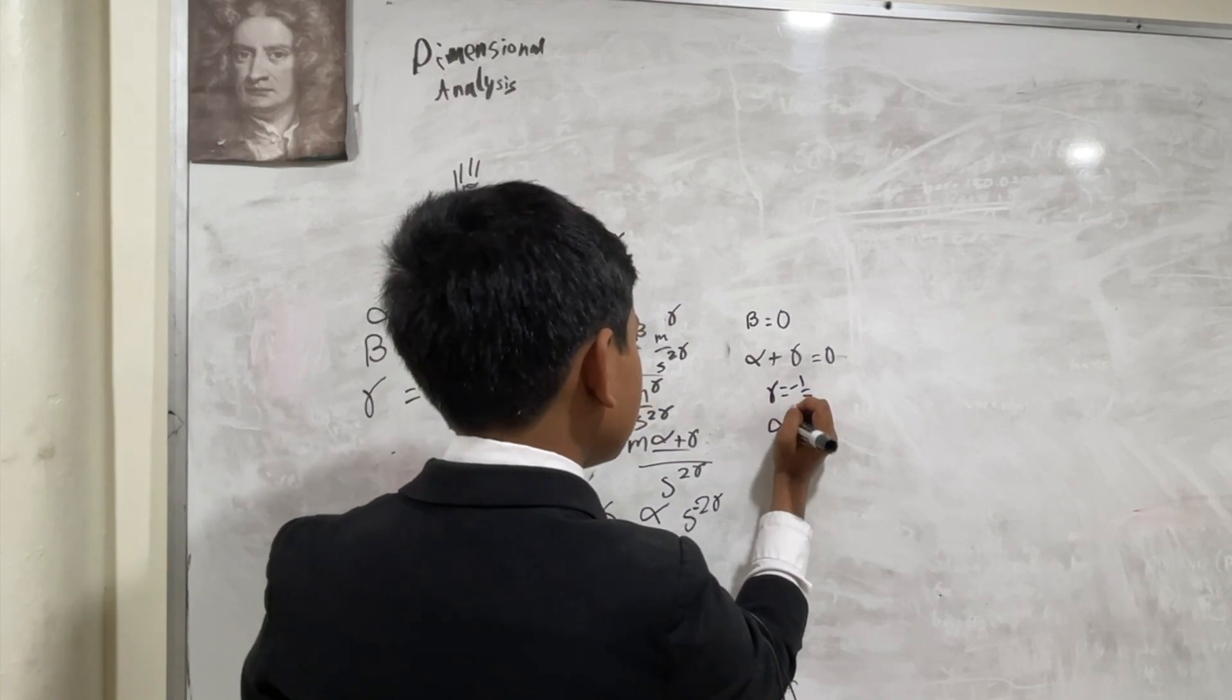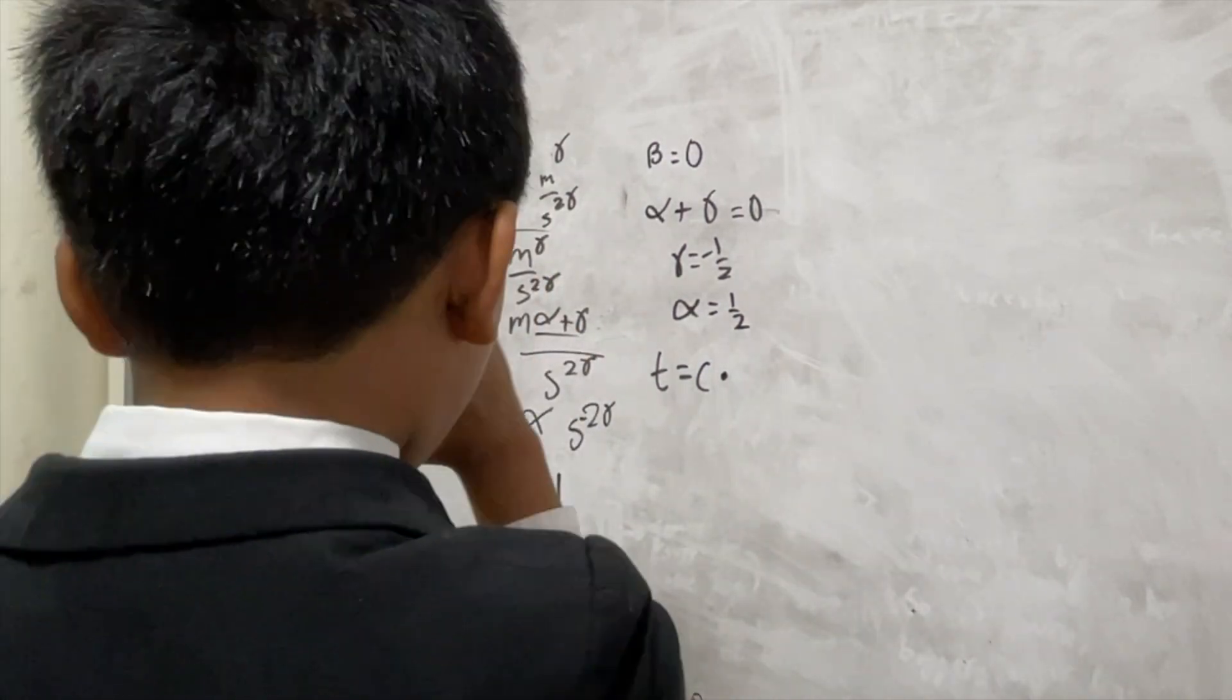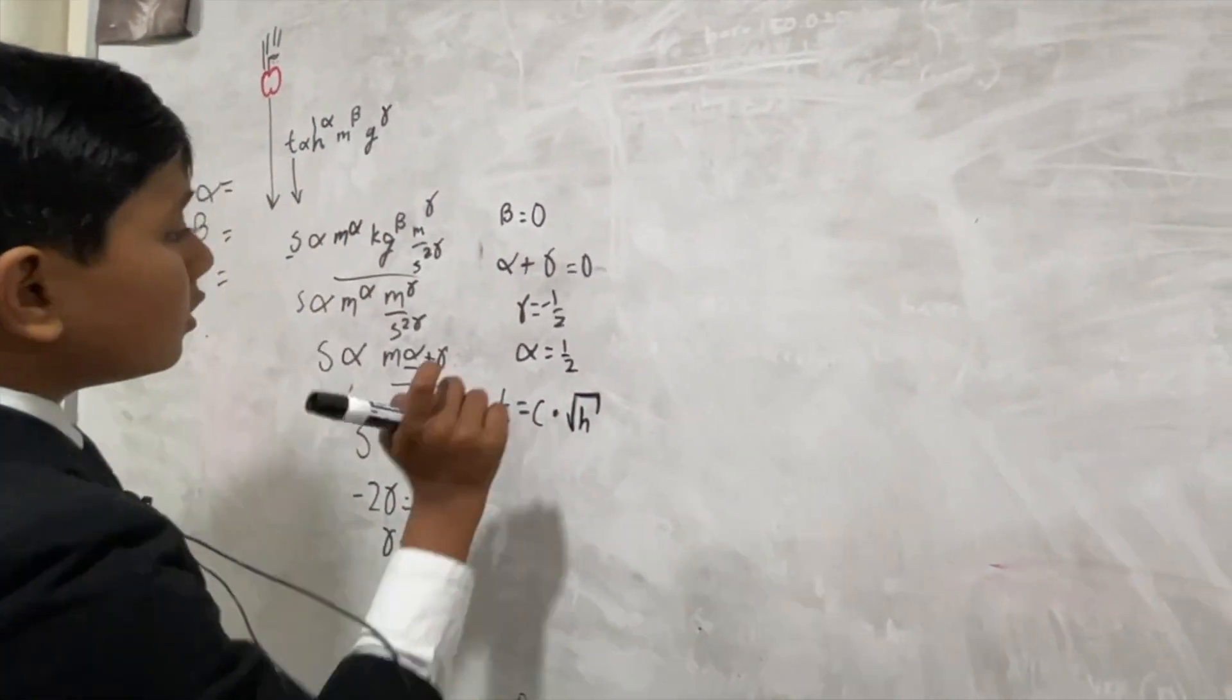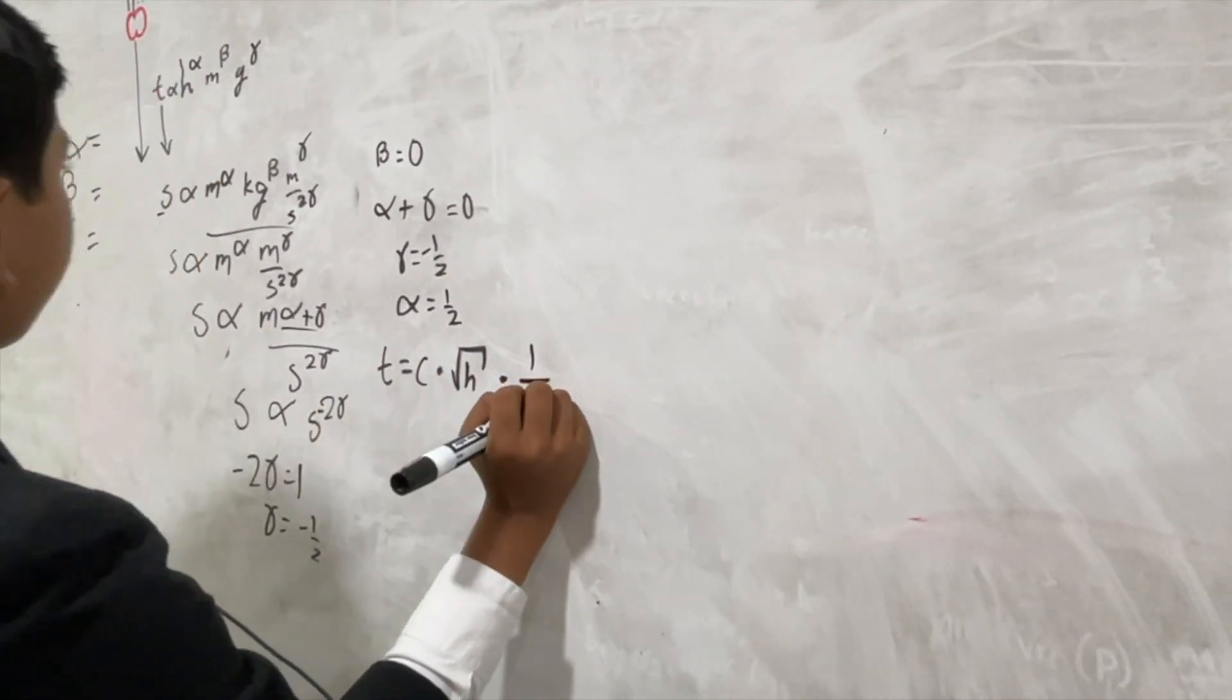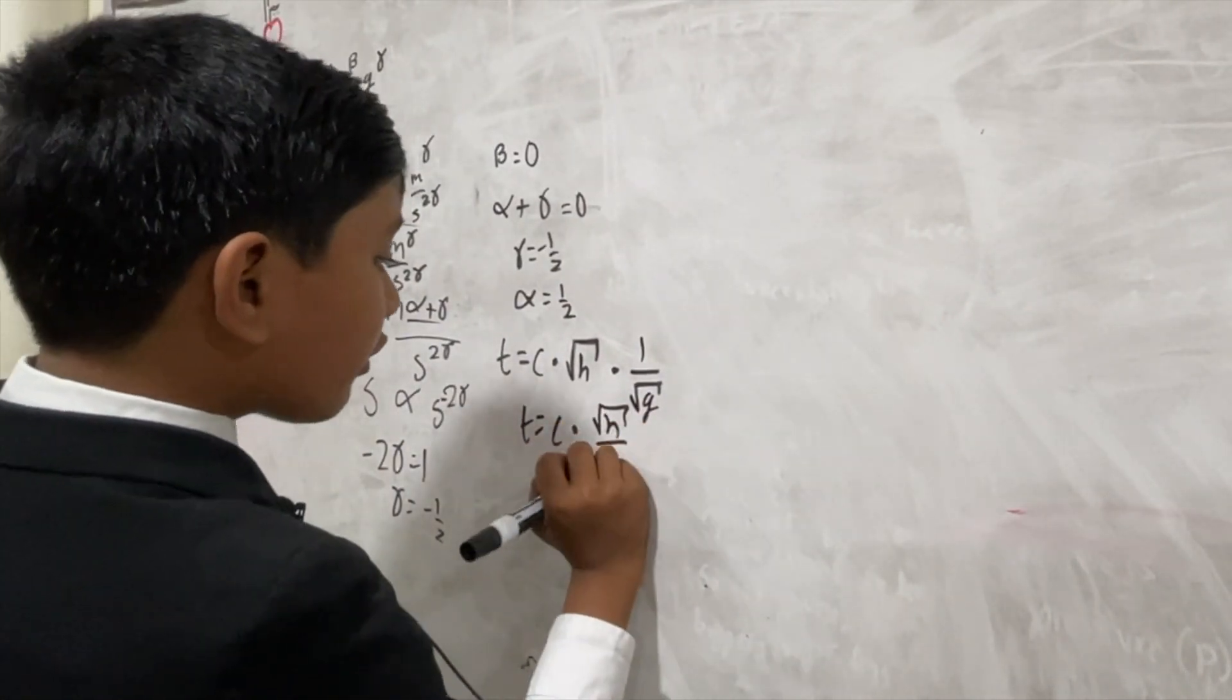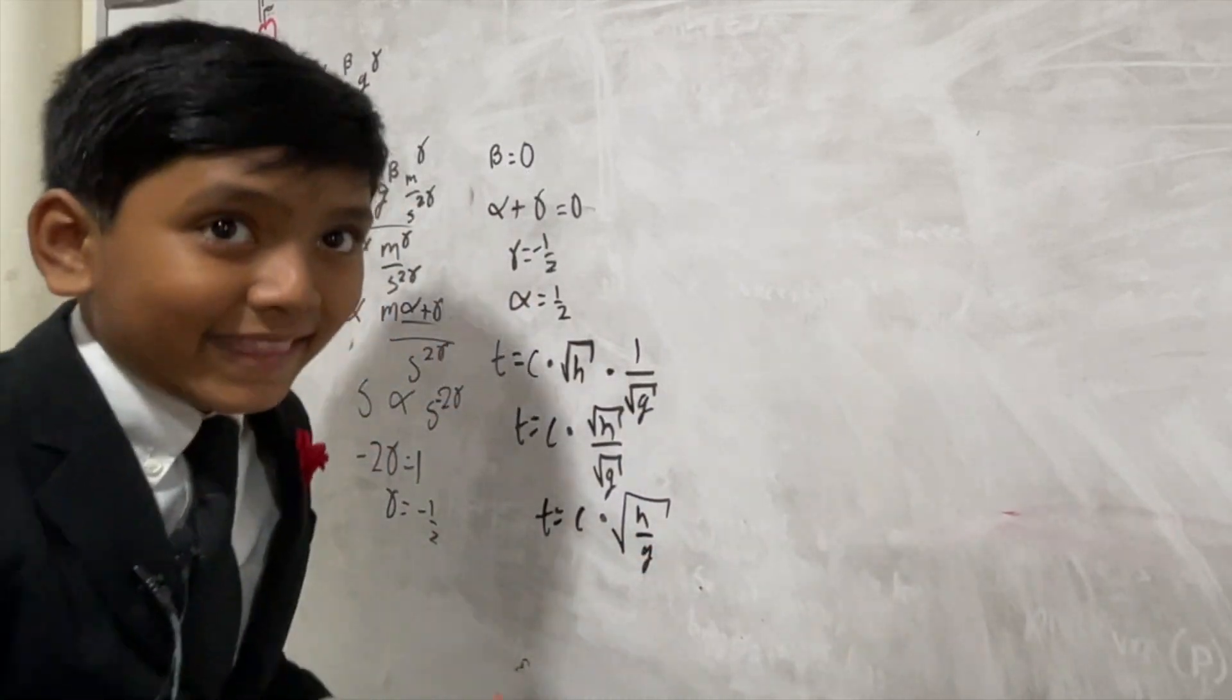And, thus, as a result, alpha must be equal to one over two. Then, you're multiplying it by h to the alpha. But, alpha is one over two. So, that means we have the square root of h. And then, you have negative one over two. So, you have one over the square root of g. So, that means you have t equals c times the square root of h over the square root of g. And that's simple.